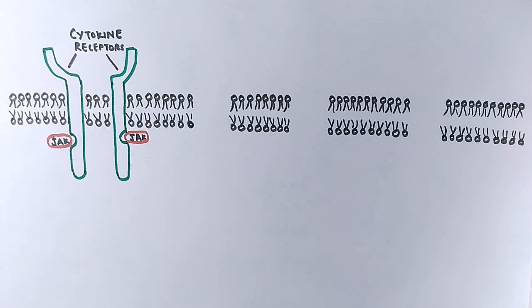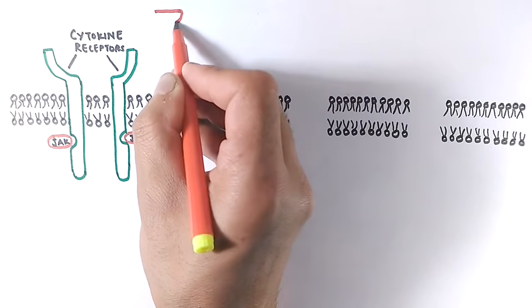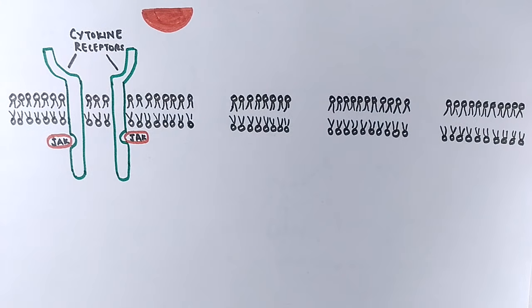These are the two JAK proteins associated with cytokine receptors. When there is presence of any signal in the form of cytokine, as shown in the figure, it's received by receptors.